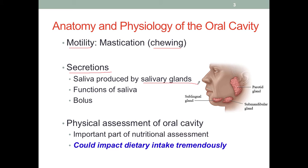Saliva also contains lysozymes which can kill germs that enter the mouth cavity. In infants and newborns, they have very active lingual lipase which can digest fat from breast milk, although this enzyme becomes less significant in adulthood. We also have another digestive enzyme, salivary amylase, which initiates the digestion of starch from our food.